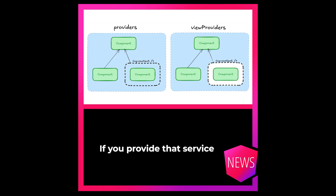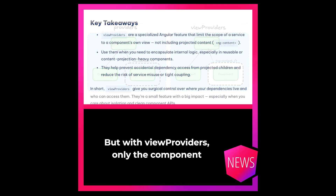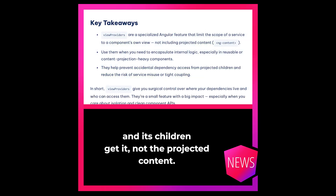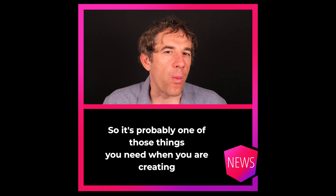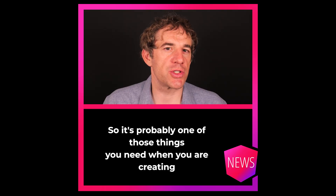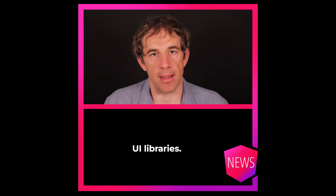Imagine you have a component that uses content projection and also needs a service — like one for state. If you provide that service the regular way, the projected content also gets access to it. But with View providers, only the component and its children get it, not the projected content. So it's probably one of those things you need when you are creating UI libraries.